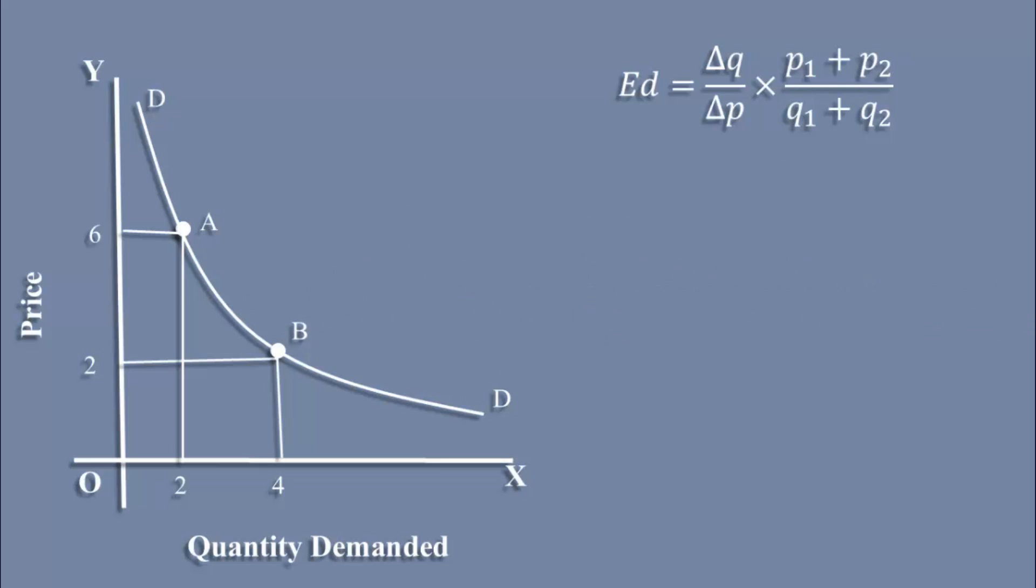We shall substitute the values in the formula. 2 minus 4 is the initial quantity minus new quantity, that is change in quantity. 6 minus 2 is the initial price minus new price, that is change in price. 6 plus 2 is initial price added with new price. 2 plus 4 is initial quantity added with new quantity.